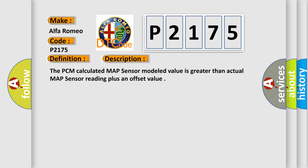And now this is a short description of this DTC code. The PCM calculated MAP sensor model value is greater than actual MAP sensor reading plus an offset value.